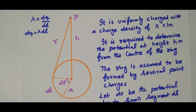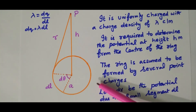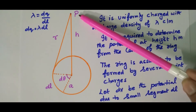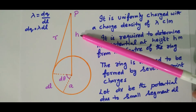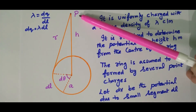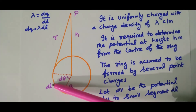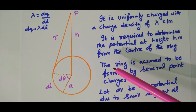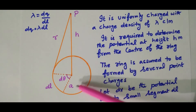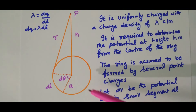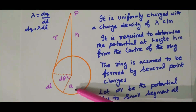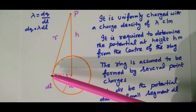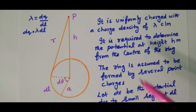Looking at the diagram, this is the ring formed by the lengthy wire with its two ends joined, with radius A meters. Our aim is to find the potential at point P, which is at a height of h meters from the center of the ring. We consider one small segment dl. The distance between the small segment and point P is r meters. The ring is uniformly charged with charge density lambda coulomb per meter.